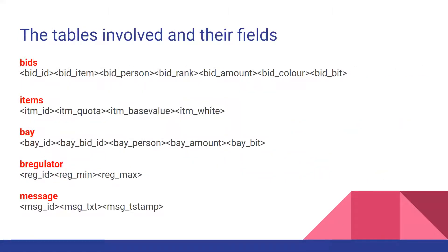You can see the tables involved and their fields in this slide. We have the table bids and the table items. In the table bids we have introduced an extra field, a bay_bit field — we shall see its usage very soon. And we have done the same thing in the table items with the field item_weight.